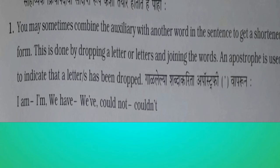Now let's look at contracted forms of auxiliaries. You sometimes combine the auxiliaries with another word in the sentence to get a shortened form. This is done by dropping a letter or letters and joining the words. An apostrophe is used to indicate that a letter has been dropped. For example, 'I am' becomes 'I'm'. Now let's watch on the screen the long form and shortened form of auxiliaries.